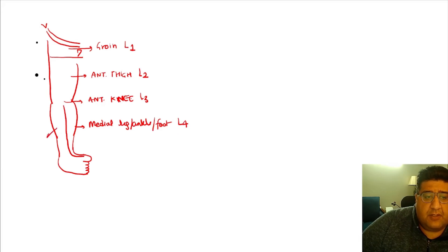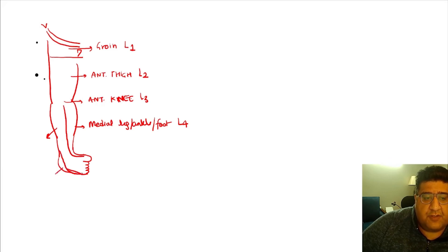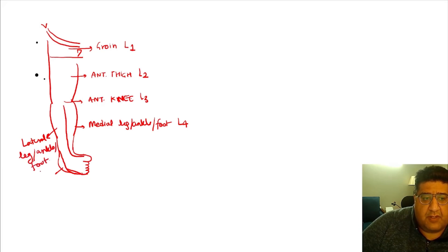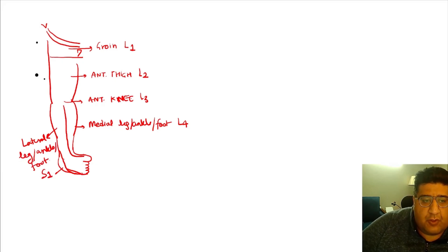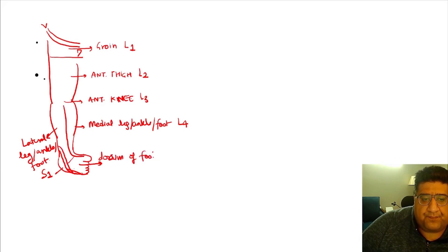If you look at the lateral leg, lateral ankle, or maybe even the lateral border of the foot, that is supplied by the dermatome S1. The dorsum of the foot is supplied by the dermatome L5.